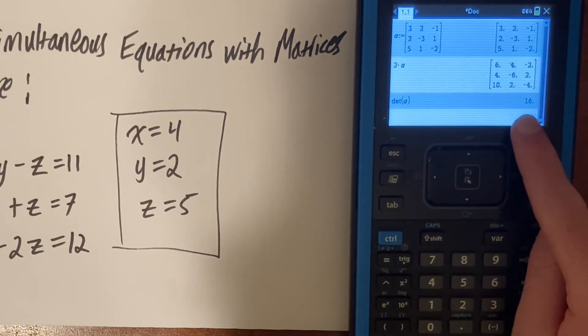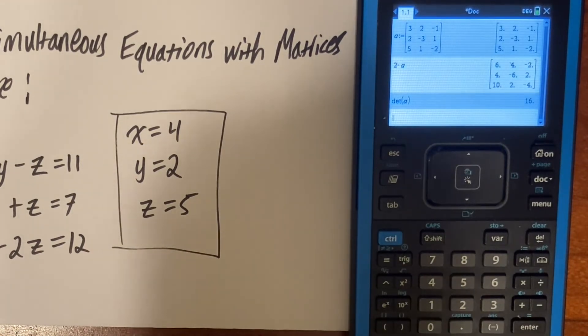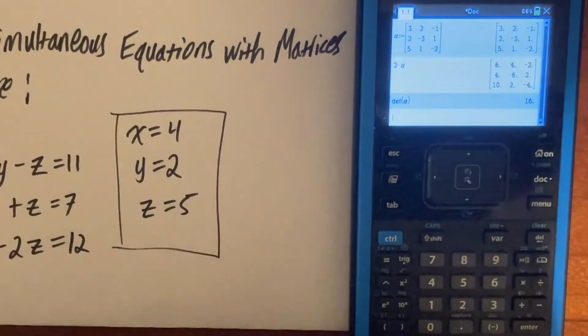As long as that value does not come back as zero, there is a solution to that simultaneous equation. As long as it is not zero, there is an intersection, or a solution. That's a useful way to know that you have a solution.